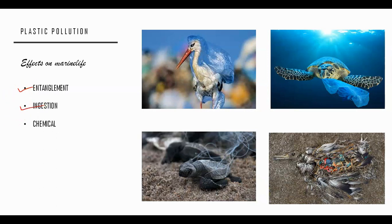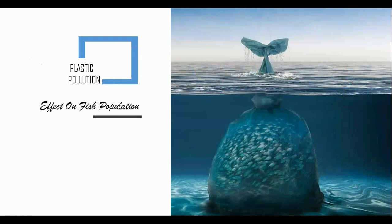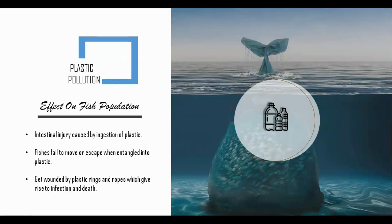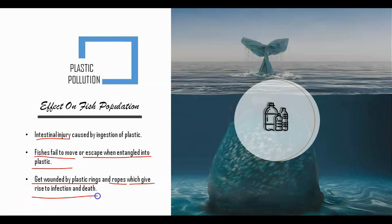The other major danger of plastic in our ocean is that it is often mistaken for food and eaten by marine animals. Instead of food, they consume plastics which can choke them and cause internal injuries or slowly starve them to death. Anti-chemicals present in plastics also affect the life of marine animals. Fish and other marine animals take in water through their gills and increasingly face risks from minute particles of plastic debris. Fish also fail to move or escape when entangled in plastic and get wounded by plastic rings and ropes, which give rise to infection and death.